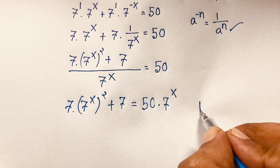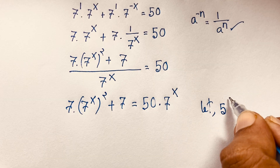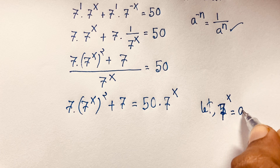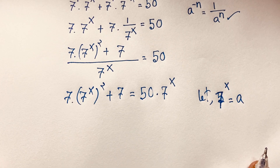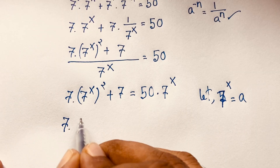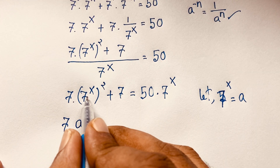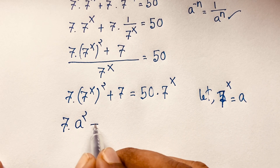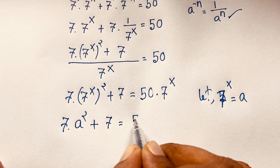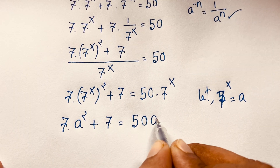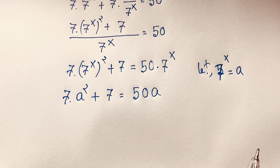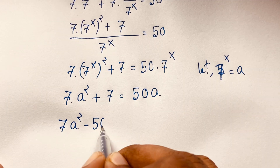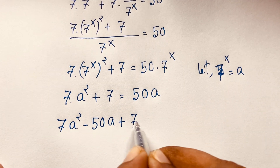Now let 7 to the power x equal a. Substituting, we have 7 times a² since 7^x is replaced by a. So the equation becomes 7a² plus 7 equals 50a, and moving terms to one side gives us 7a² minus 50a plus 7 equals 0.